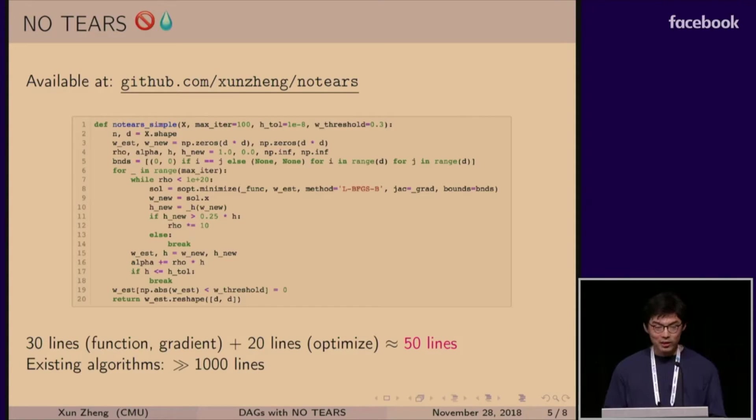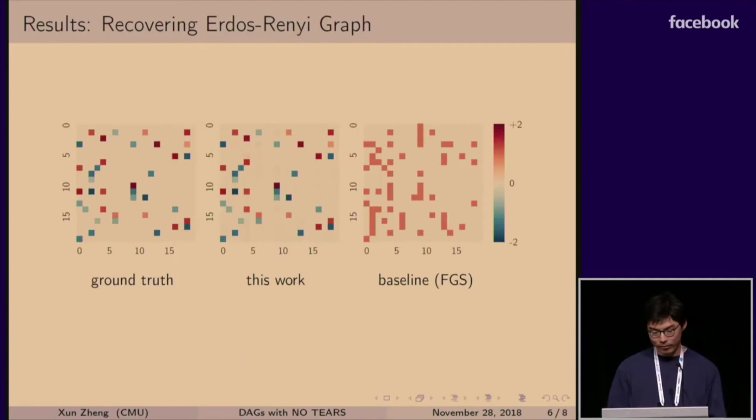So for the reason that it's so easy to implement, this method is called no-tears, and it can really be implemented in like 50 lines of Python, and all we do in this piece of code is calling SciPy's LBFGS, and this code is on GitHub, whereas in most of the existing algorithms, they require over a thousand lines of code of very clever heuristics hand-coded.